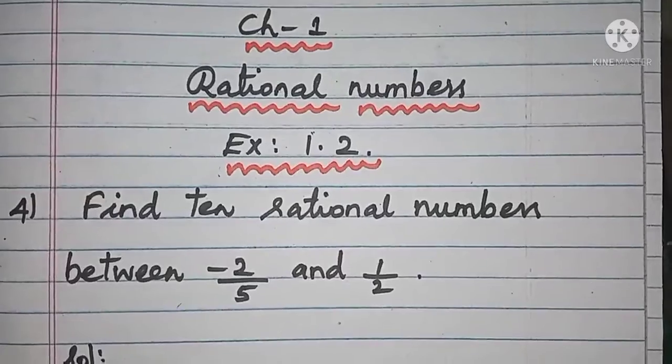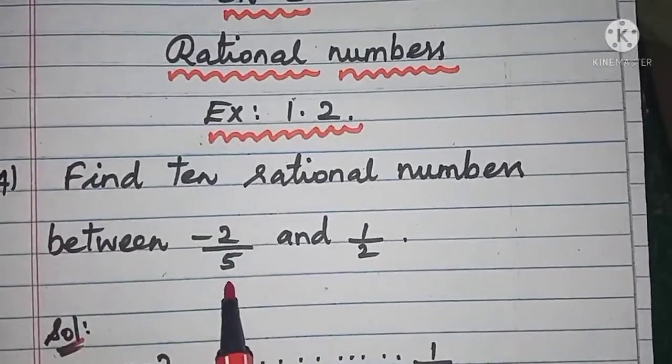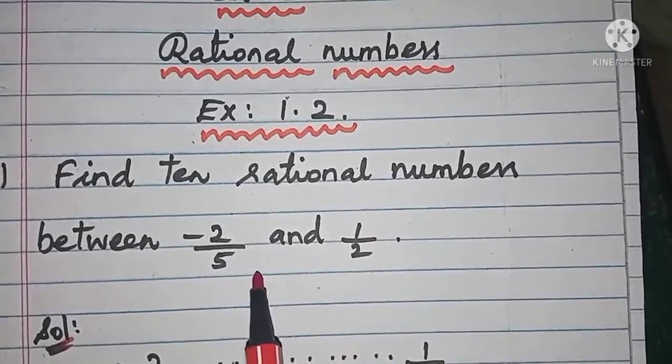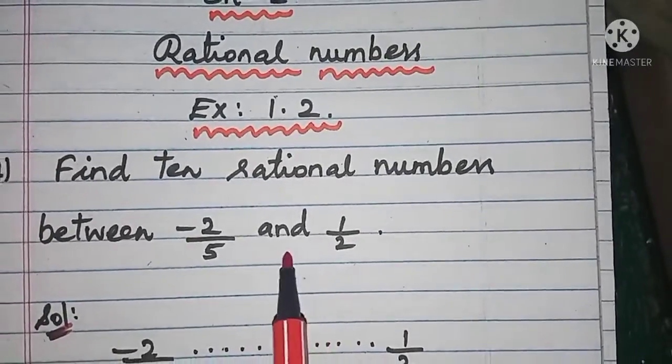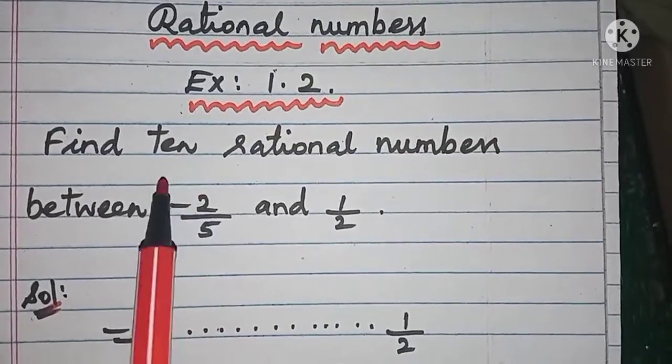The question is -2/5 and 1/2. There are so many numbers present in between these two numbers. You are going to select only 10 rational numbers. Let us see how we are going to solve this question.